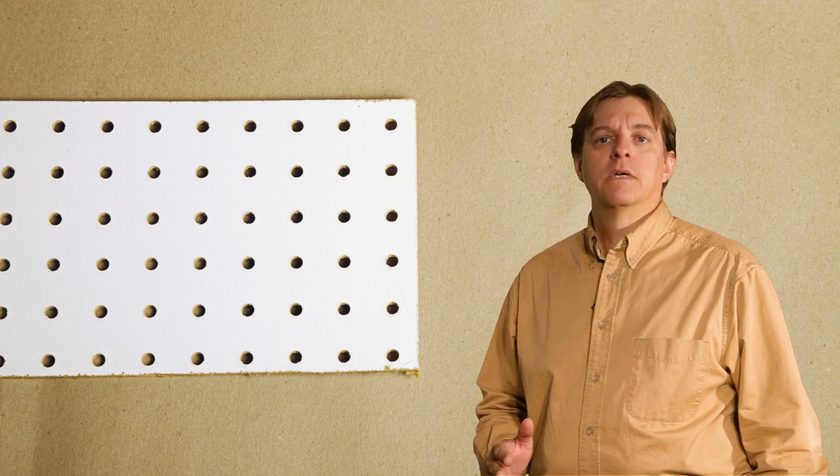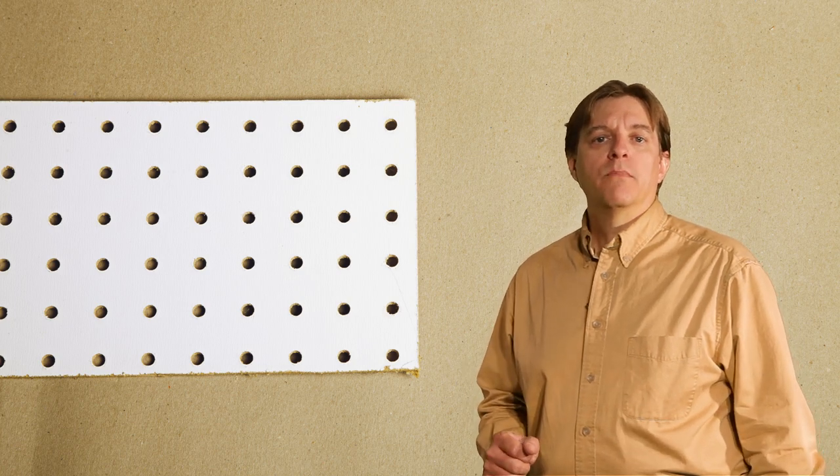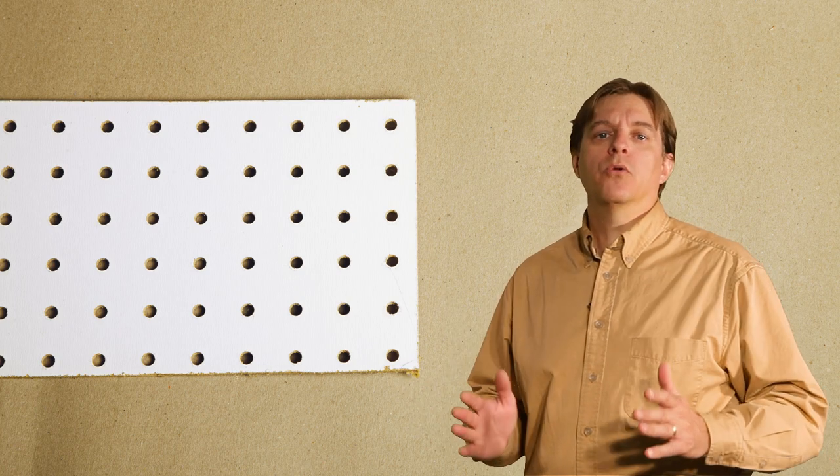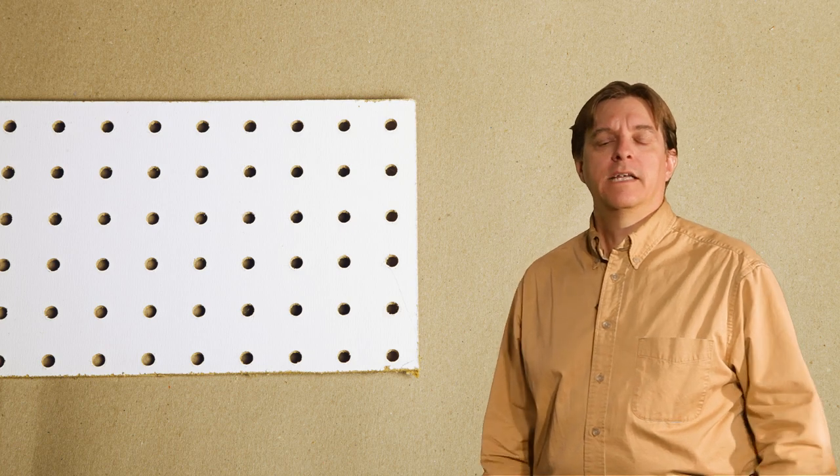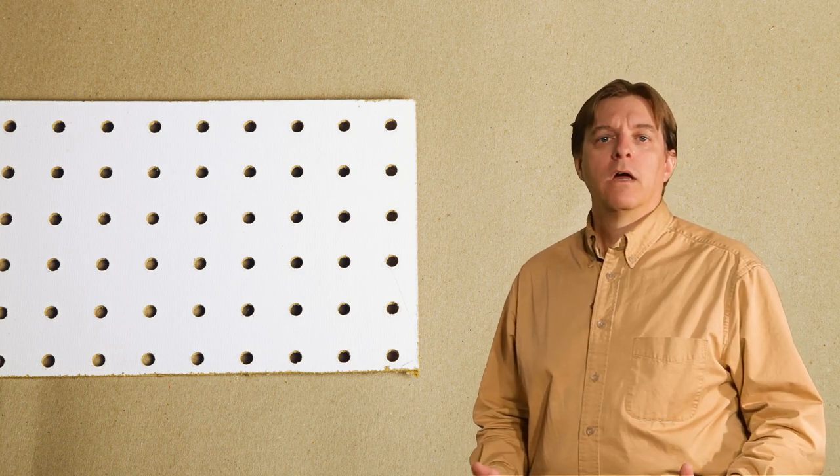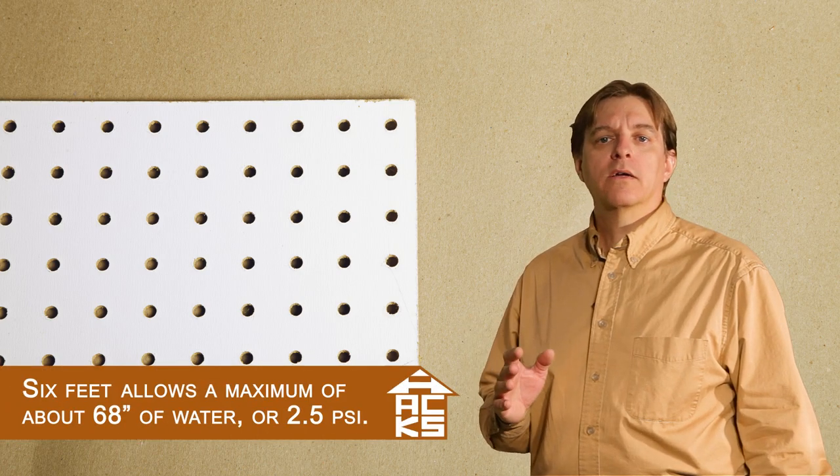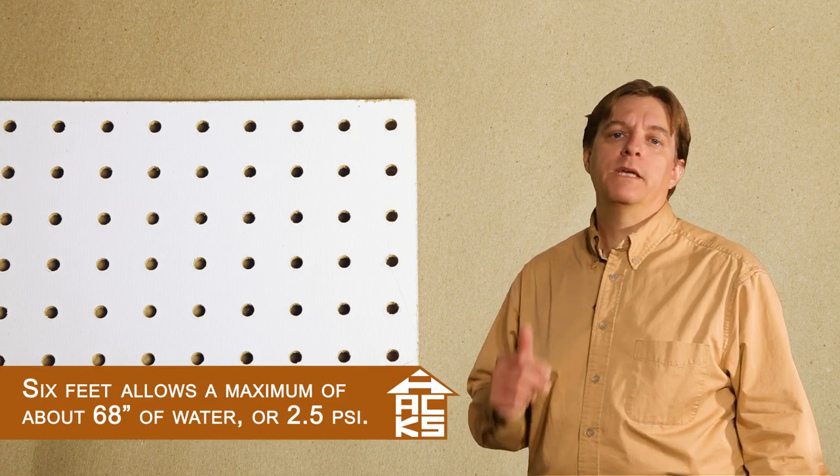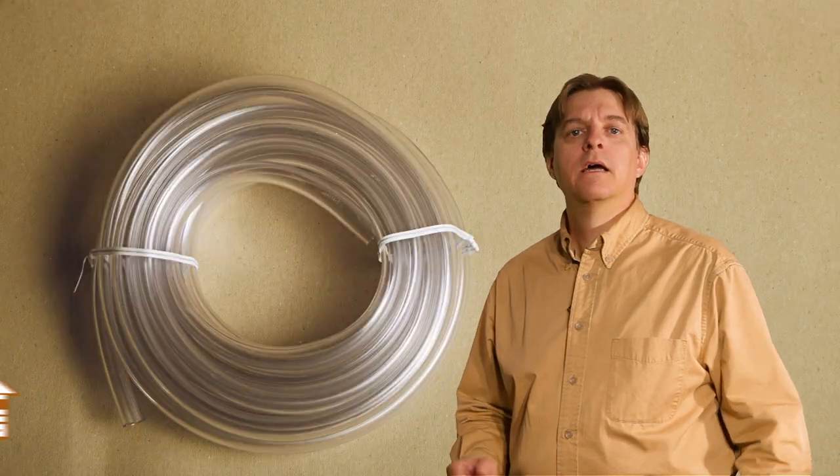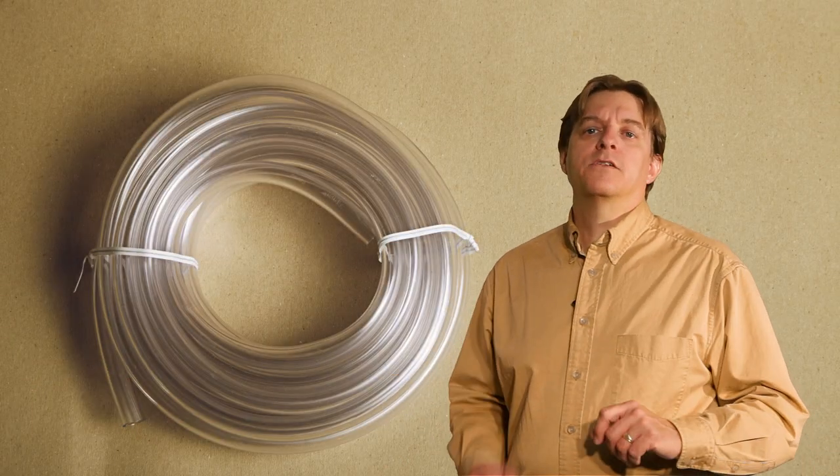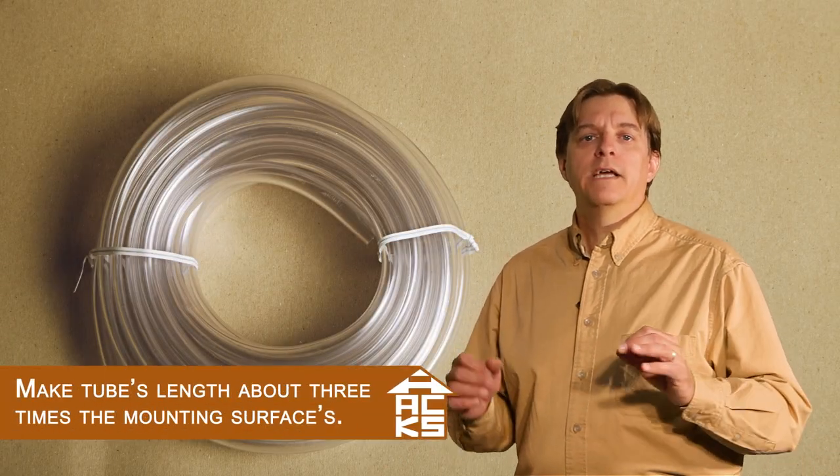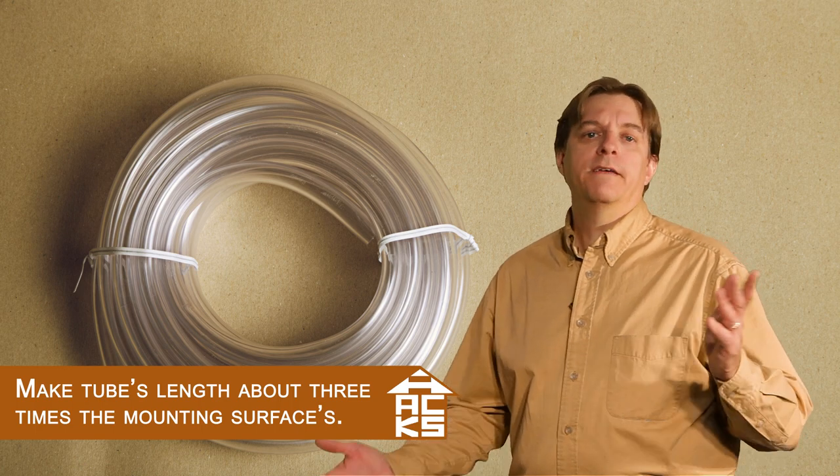For this build, you'll need a flat mounting surface. I used some leftover pegboard, but it could be a piece of wood or even cardboard if it's rigid enough. It does need to be moderately long. The longer it is, the higher pressure you can test. I'm making mine about 6 feet long. If it's a lighter color, the readings will be easier to make. You'll need clear tubing. The size isn't critical. I used some with 3/8 inch inside diameter and 20 feet long.